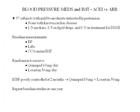Let's talk about blood pressure medicines, intermediate thickness, and endothelial function. We're going to compare angiotensin-converting enzyme inhibitors with angiotensin receptor blockers. We'll take 57 subjects with mild to moderate untreated high blood pressure — none had cardiovascular disease, but they had risk factors: a third were smokers, a third were on lipid-lowering drugs, a fifth were being treated for type 2 diabetes.